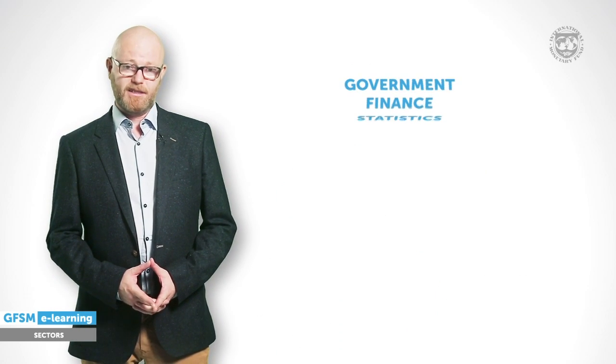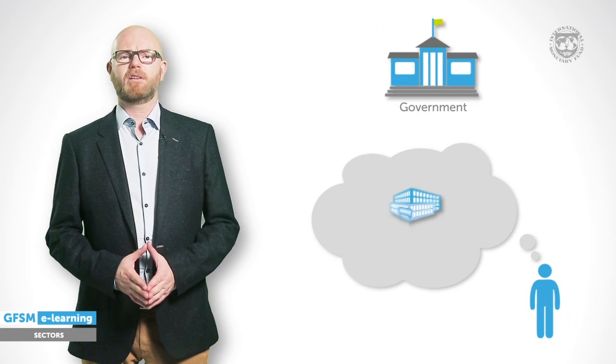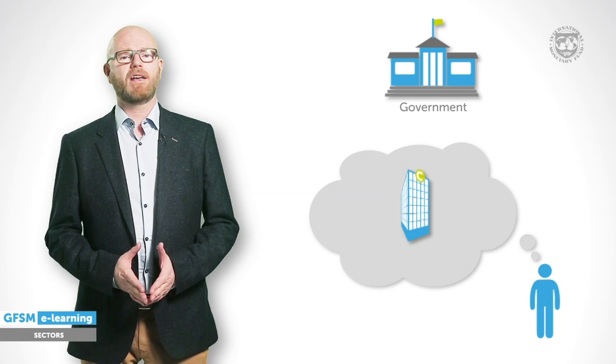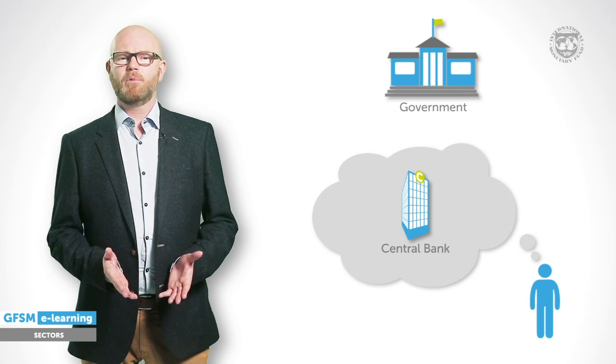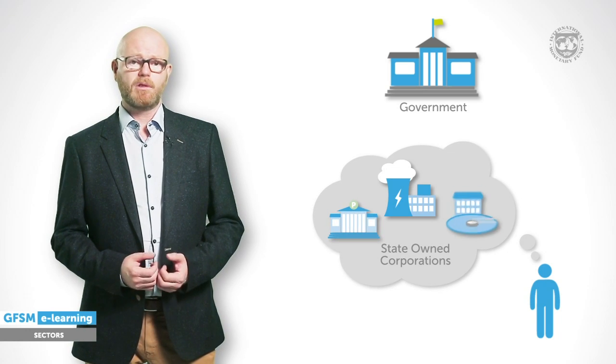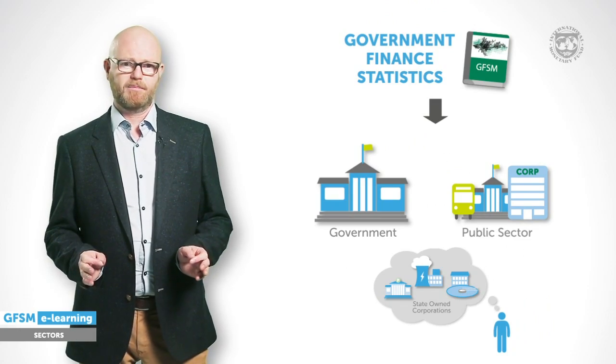At a first glance, it seems quite obvious: government finance statistics cover the government. But what does government actually consist of? Some would assume that government covers the ministries, municipalities, provincial governments and the like. Others say this includes the central bank. What about the government owning shares in corporations such as energy companies, postal banks or local water treatment companies? And how does government relate to the concept of the public sector? A practical and sound definition of the structure of the economy is needed to prepare statistics that are fit for use, making fiscal analysis meaningful and data internationally comparable.